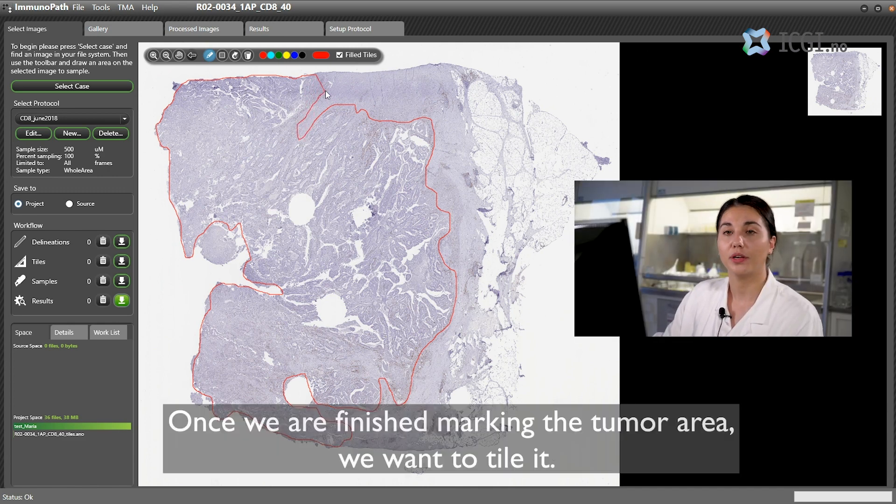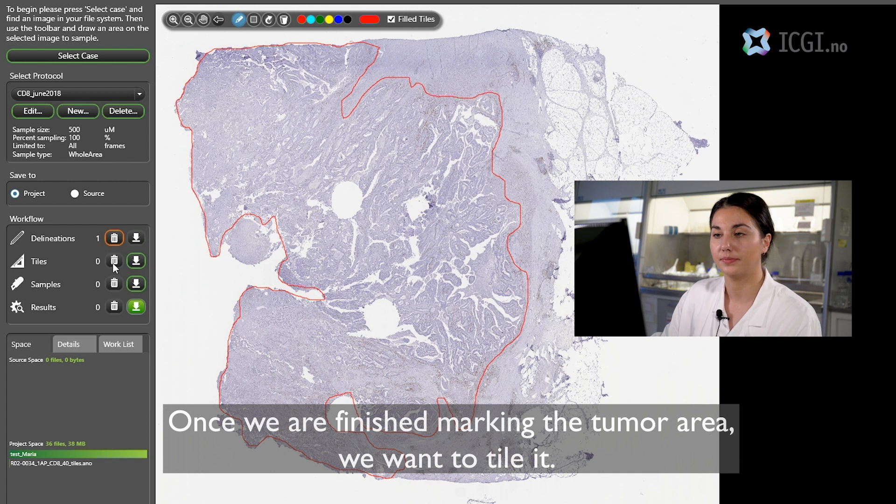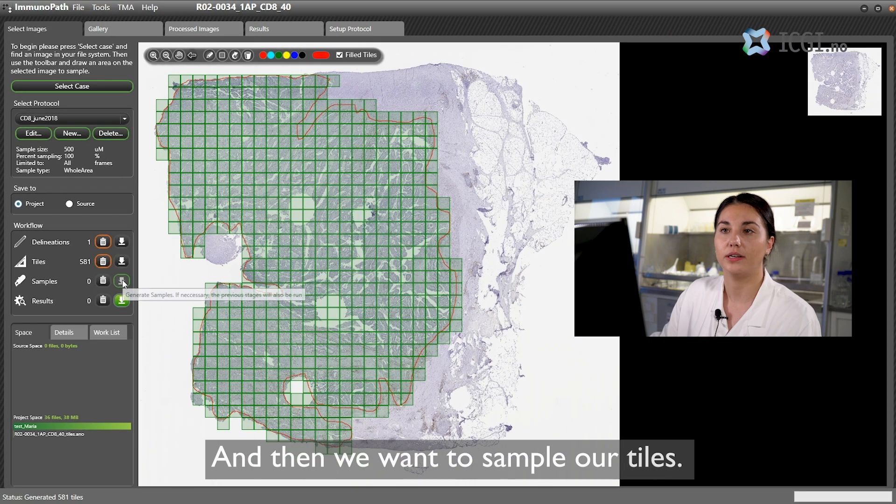Once we are finished marking the tumor area we want to tile it. Do that by pressing tiles. And then we want to sample our tiles.